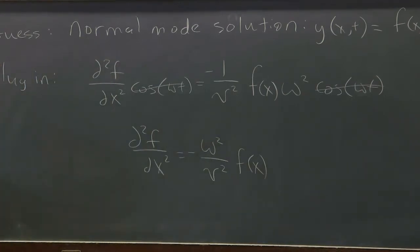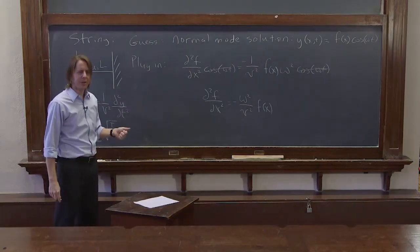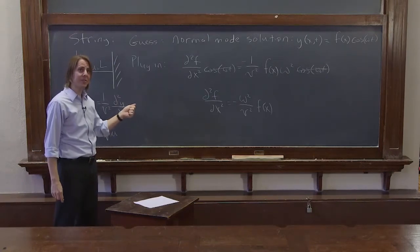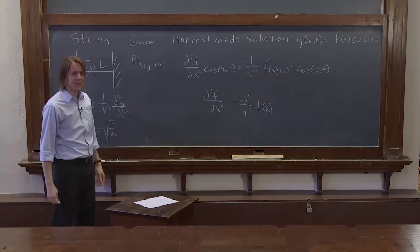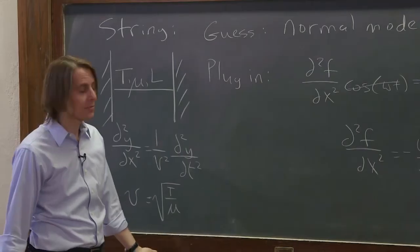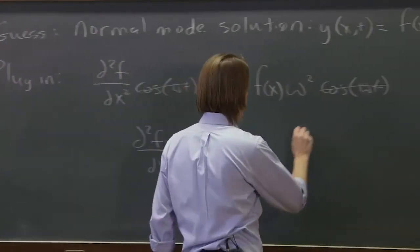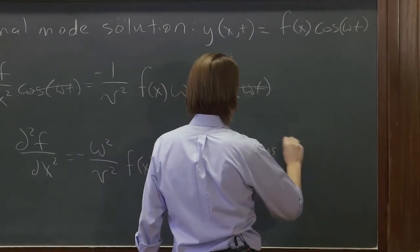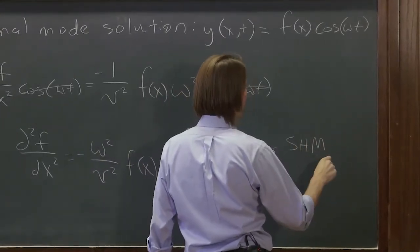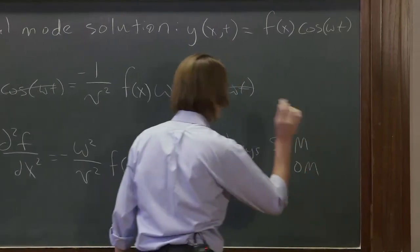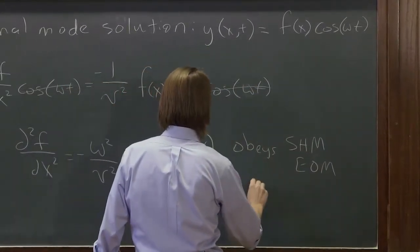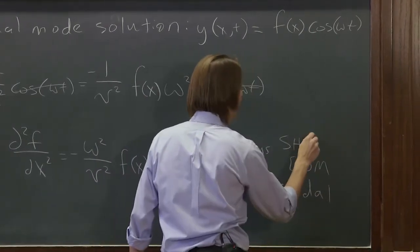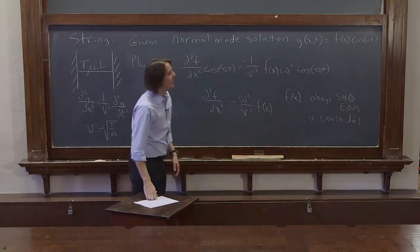You say, okay, the equation says good guess if that's true. And that looks familiar. What is that? That's two derivatives equal negative constant. Oh, that's a simple harmonic oscillator equation again, except it's with respect to space. So f of x obeys the simple harmonic oscillator, or the simple harmonic motion equation of motion. It's that f of x is sinusoidal. Simple harmonic oscillator equation of motion. So it's sinusoidal.